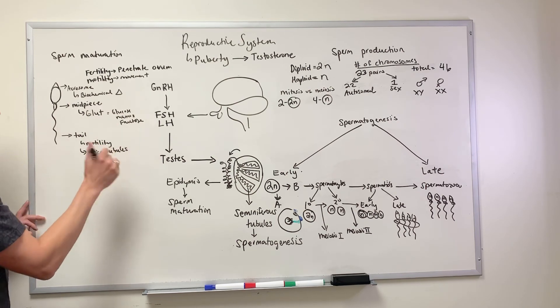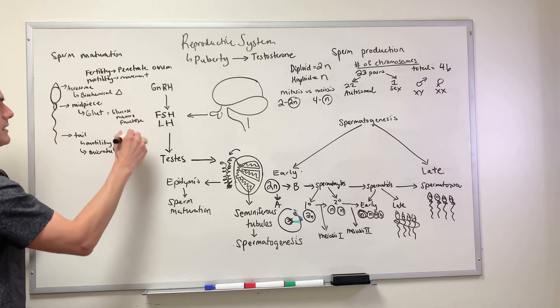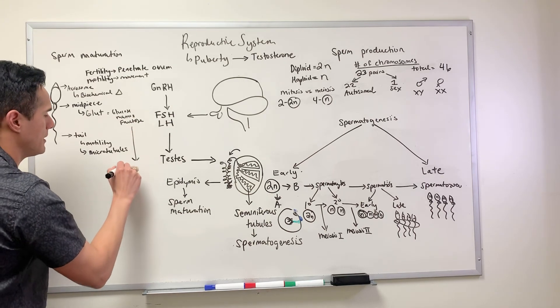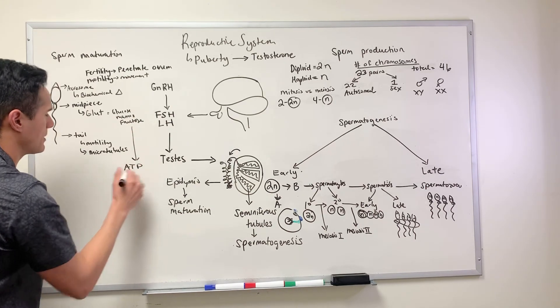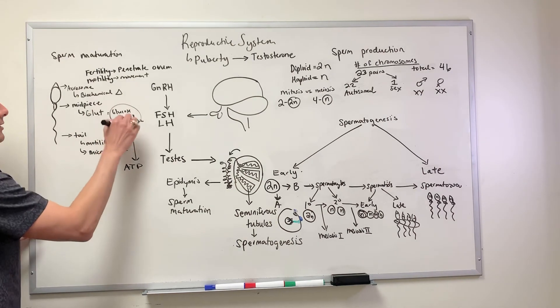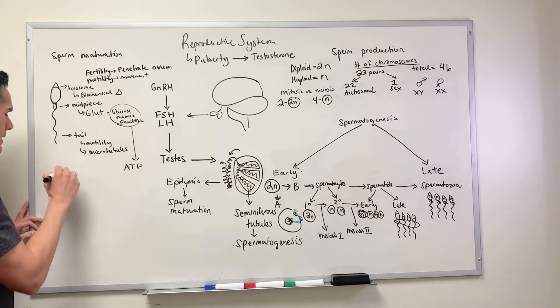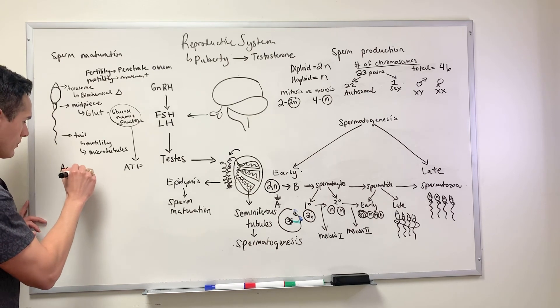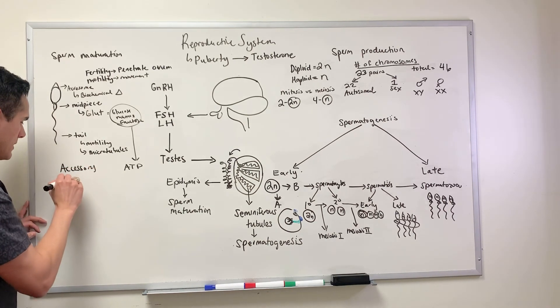Earlier I said that the GLUT receptors are using this in order to have these energy sources which can then be broken down into ATP to power the movement of the tail. The source of these sugars is from the accessory glands.